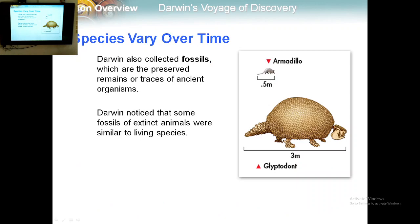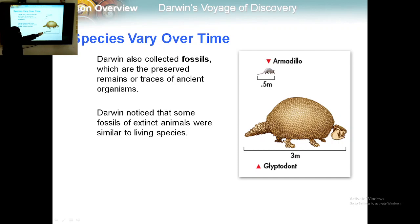The third pattern is species vary over time. Darwin also collected fossils — preserved remains or traces of ancient organisms. From these fossils, Darwin noticed that some fossils of extinct animals were similar to living species, as seen in comparisons of fossil and living animals. This led Darwin to observe that species vary over time.